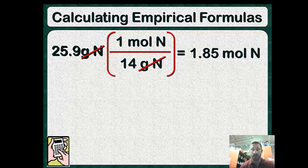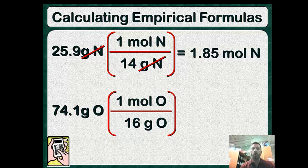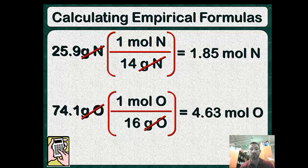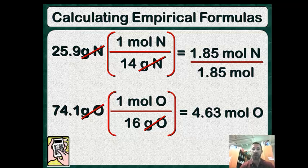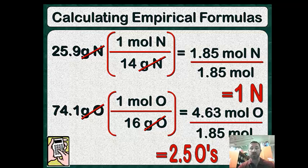Now we do the other element: 74.1 grams of oxygen. We set up a factor label, putting 16 grams of oxygen at the bottom and one mole of oxygen at the top. Grams of oxygen cancel, leaving us with moles of oxygen. The next step is to divide each number of moles by the smallest number of moles — which is 1.85. That gives us 1 mole of nitrogen. And 4.63 divided by 1.85 gives us 2.5 moles of oxygen.